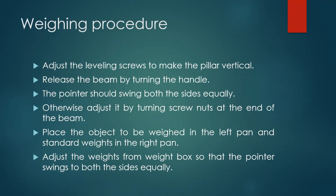If the pointer moves more towards the left, the object to be weighed is heavier than the solid weights, so we must increase the weight on the right pan. If the pointer moves more towards the right, the solid weight is more and we must reduce it. When checking for accuracy, we keep the weights constant on the right and increase or decrease the quantity of the object depending on how far the pointer is moving on either side.